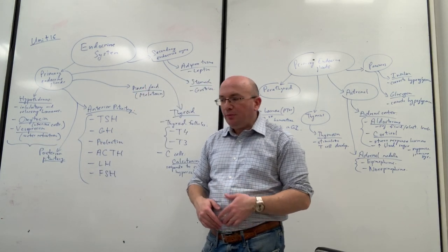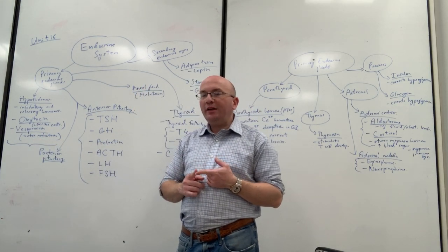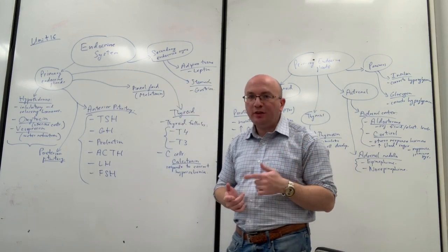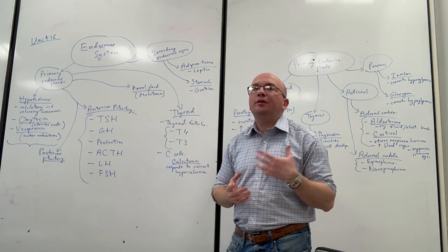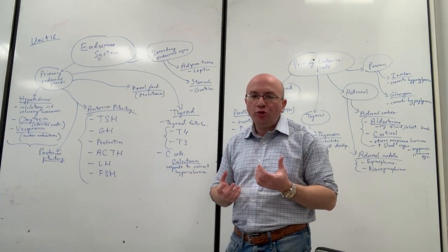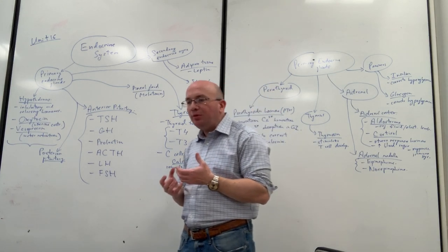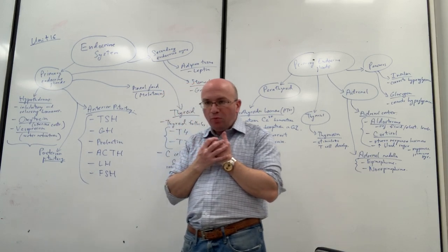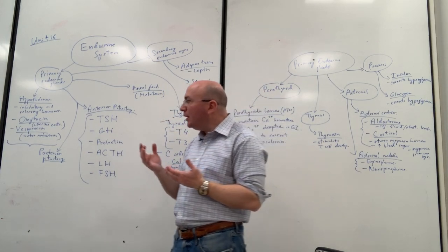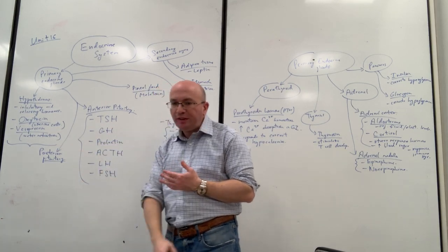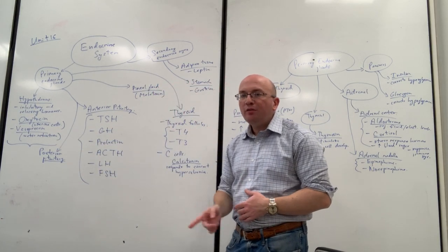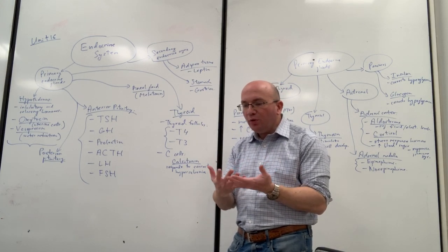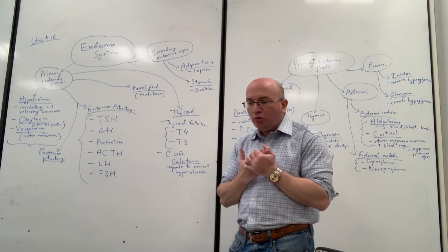Vasopressin — another hormone from the hypothalamus — is also called antidiuretic hormone or ADH. This hormone acts on the kidney, specifically the collecting ducts in the nephron, where there are receptors for ADH that allow water retention. The kidneys are able to either release more water or keep more water in the body to regulate water balance. One of the primary ways this is done is through vasopressin, released from the posterior pituitary, which travels to the collecting ducts of the kidney and allows more water retention to take place.